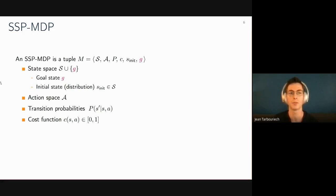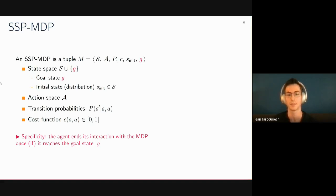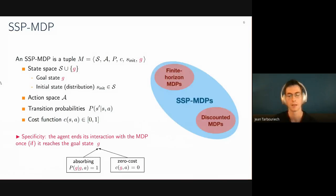The environment considered is a stochastic shortest path Markov decision process (SSP MDP), composed of a state space S augmented with a predefined goal state G, action space A, transition probabilities P, and costs C(s,a) in the interval [0,1]. The main specificity of SSP is that there exists a goal state G such that the agent ends its interaction once it reaches the goal, which is cast as an absorbing and zero-cost state. SSP MDPs are quite general; both finite horizon MDPs and discounted MDPs are subclasses.